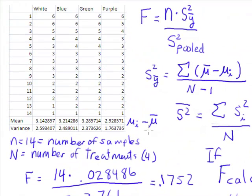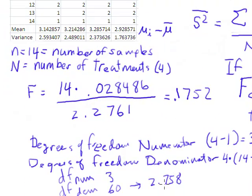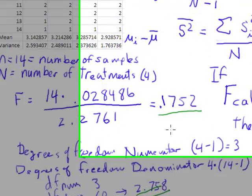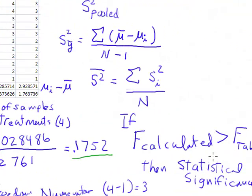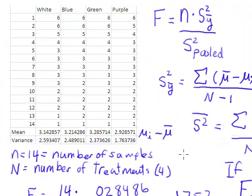So I'm going to compare these two numbers: 2.758 and 0.1752. Since this calculated is less than the table value, there's no statistical difference between these numbers, and so there's no statistical difference.